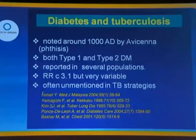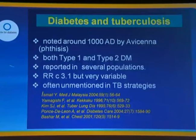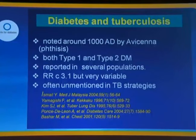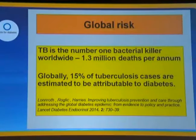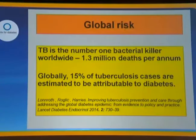The association between diabetes and tuberculosis has been known for a very long time — 3,000 years or more. It's been reported in a number of different populations. If you take the average, the relative risk is about three-fold increased, but it's quite variable. Interestingly, it's a Cinderella — often unmentioned in tuberculosis strategies, which these days very often tend to emphasize HIV infection rather than diabetes. Tuberculosis is the number one bacterial killer worldwide, with about 1.3 million deaths per year. Globally, about 15% of tuberculosis cases are estimated to be attributable to diabetes — a very large number.